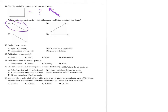Number twelve: scalar is to vector as speed is to velocity — choice A. Displacement is a vector and distance is a scalar, so that order doesn't match. Speed and distance are both scalars; displacement and velocity are both vectors. Only choice A matches. Number thirteen: which is a vector quantity? Speed is scalar, work and energy are scalar, mass is scalar — displacement is the vector. Number fourteen: which term identifies a scalar quantity? Displacement, force, and velocity are all vectors — time is the scalar.